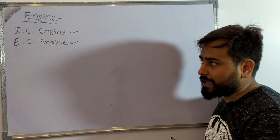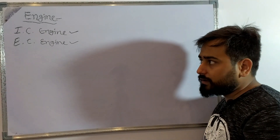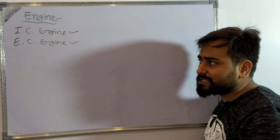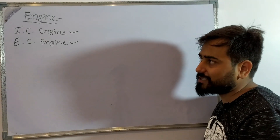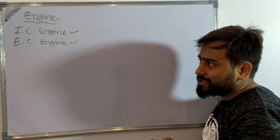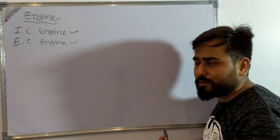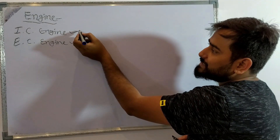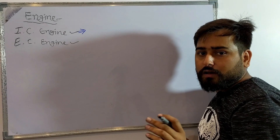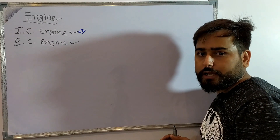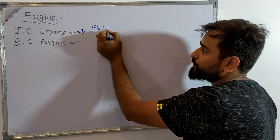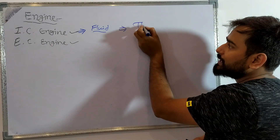What are IC engine and EC engine? In an IC engine — internal combustion engine — the combustion happens internally, inside the engine. In an EC engine — external combustion engine — the combustion happens outside the engine. Now, the difference I just mentioned is only a name-based difference. The real first difference between them is: in an EC engine, the combustion fluid is the same throughout the cycle.